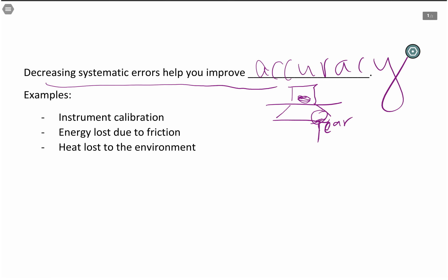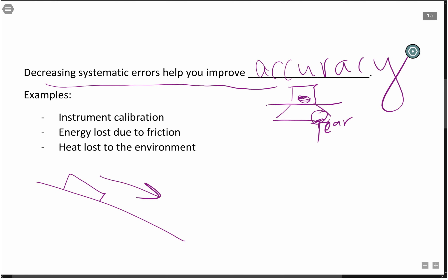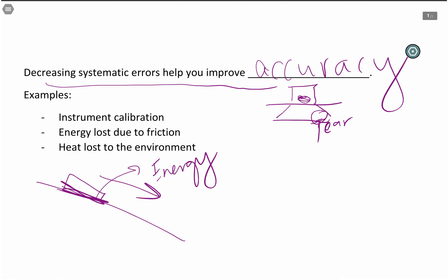Another example is energy lost due to friction. For example, let's say you are measuring the acceleration of a block going down a ramp, and you did not consider friction. So friction is between your block and the ramp. You did not consider friction. Well, that means energy is going to be lost from your system, which means the acceleration that you calculate may or may not be so accurate from your ideal situation.